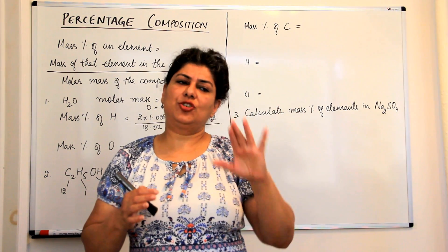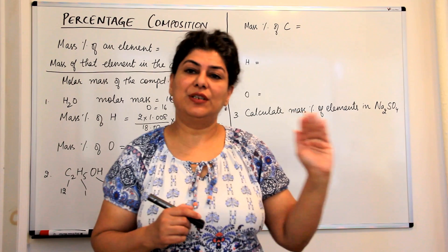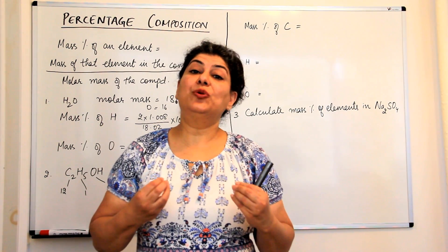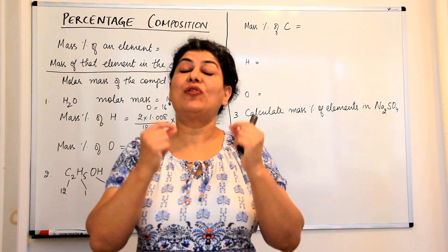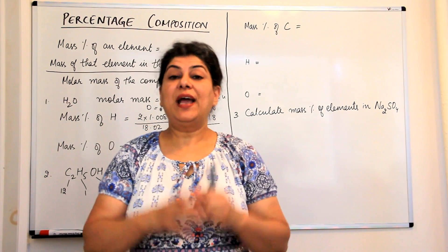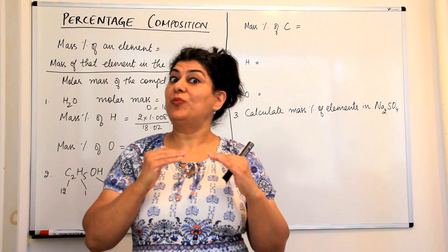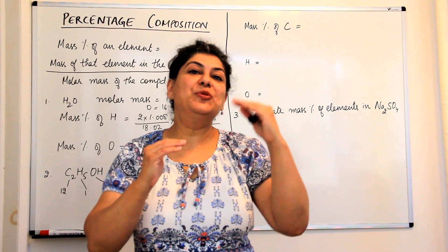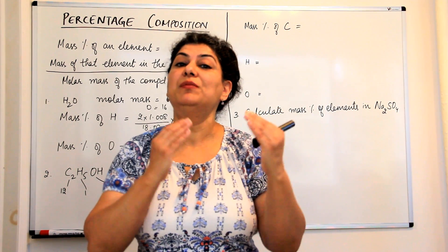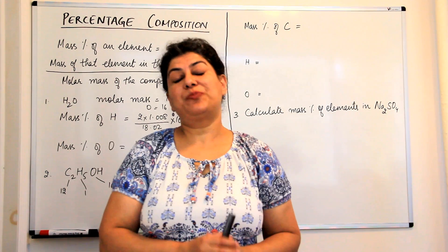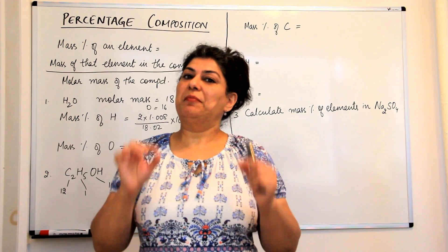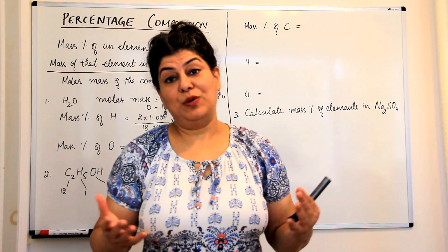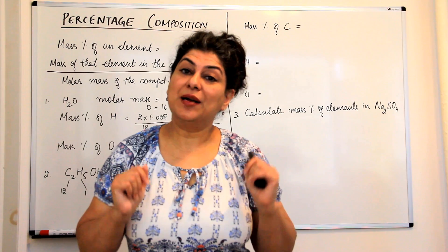There are tests to carry out the identification of the different elements present in a compound. Once you know the elements, you would like to know the percentage composition of each element. This leads you to find out the empirical formula, which is the minimum ratio of all the elements present. By multiplying the empirical formula by an appropriate number, you get the molecular formula.